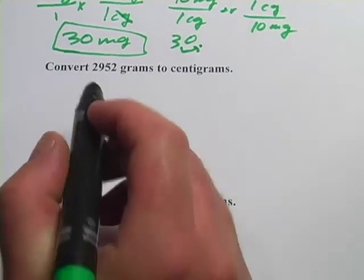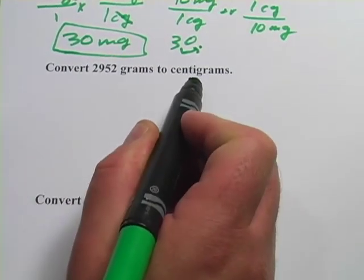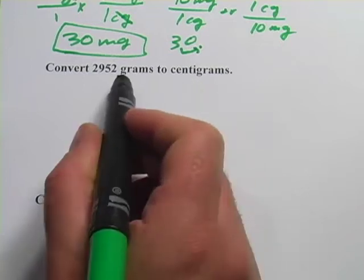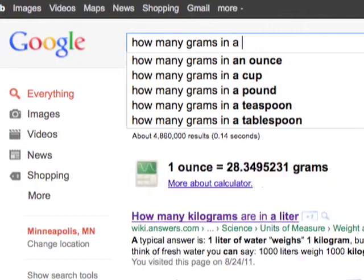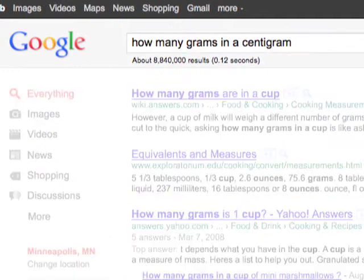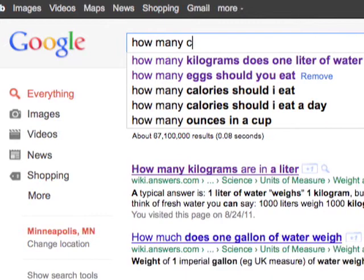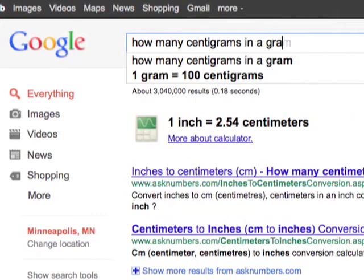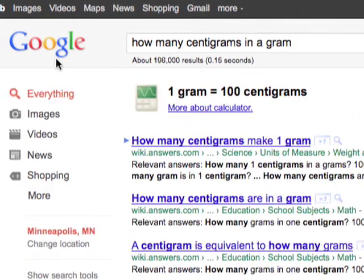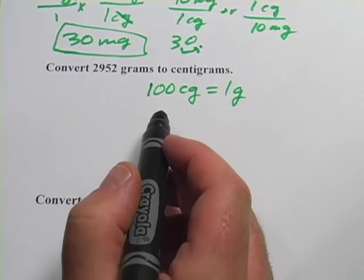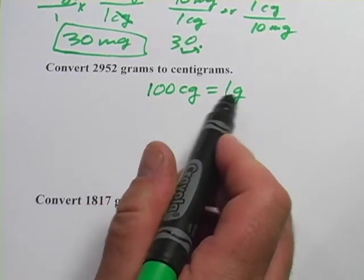It says convert 2,952 grams to centigrams. If you type into a search engine how many grams in a centigram, you'll get 0.01. So you might want to type it in the other way, how many centigrams in a gram, and you'd get 100 centigrams in one gram. Just like there are 100 centimeters in a meter, there are 100 centigrams in a gram.